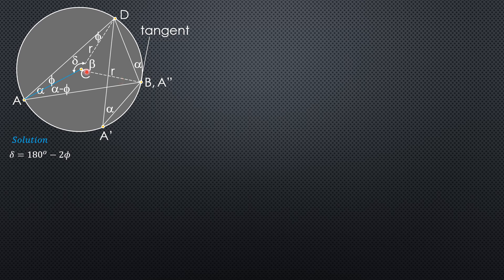So angle CBA is also alpha minus p, as indicated. Therefore, if we denote the angle at C in triangle ACB as epsilon, then epsilon equals 180 degrees minus 2 times the quantity alpha minus p. Then, lastly, around point C, one full revolution is 360 degrees.